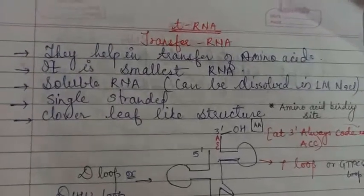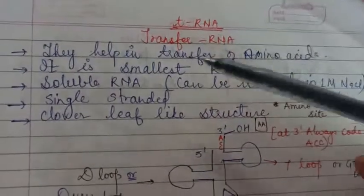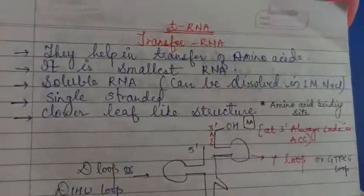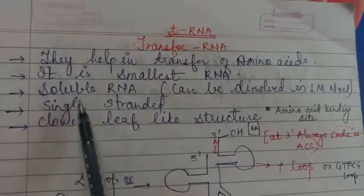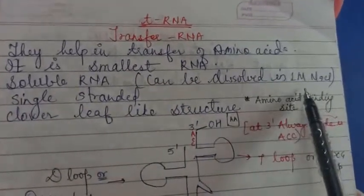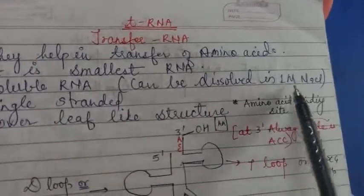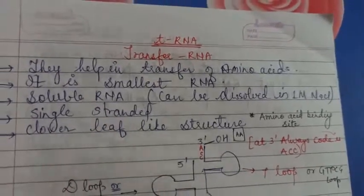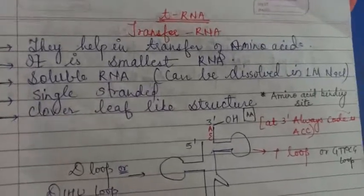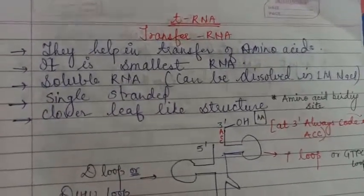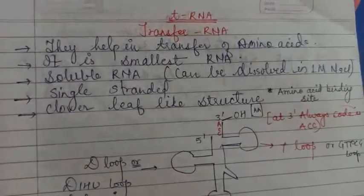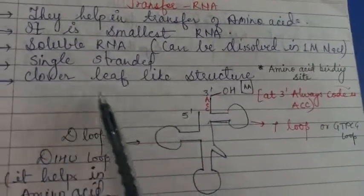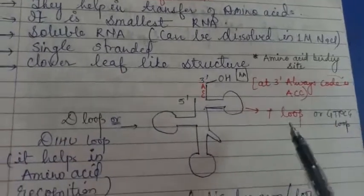The second type of RNA is tRNA, which is also called transfer RNA. They help in transfer of amino acids that we have already discussed. It's the smallest RNA. The soluble RNA can be dissolved in one mole NaCl and it is always single stranded. Its structure is like clover leaf structure.